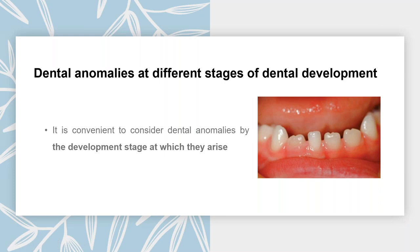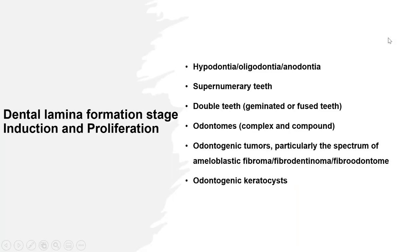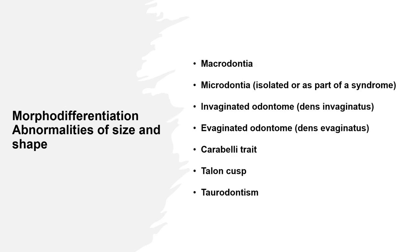It's more convenient to consider dental anomalies by the developmental stage at which they arise. At the dental lamina formation stage — induction and proliferation — we can encounter anomalies of number, such as hypodontia, hyperdontia, double teeth, and odontomes. If the insult happens at the morphodifferentiation stage, this is where abnormalities of size and shape occur, such as macrodontia, microdontia, invagination, evaginated teeth, and accessory cusps.